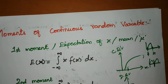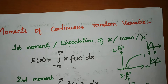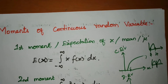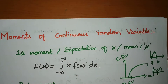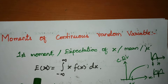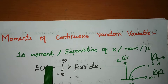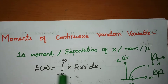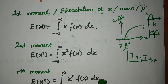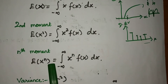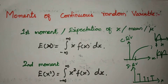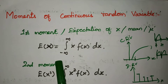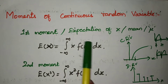Let's see the moment — we will explain the moment. The moment is the expectation of x. So x to the power 1 is the first moment, E[x²] is the second moment, x to the power n is the nth moment.